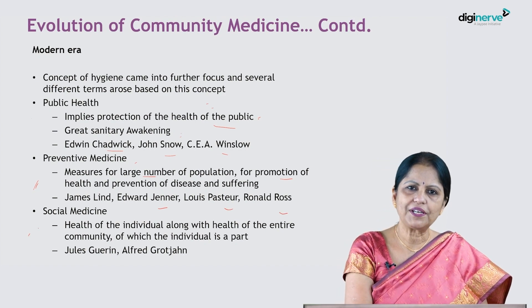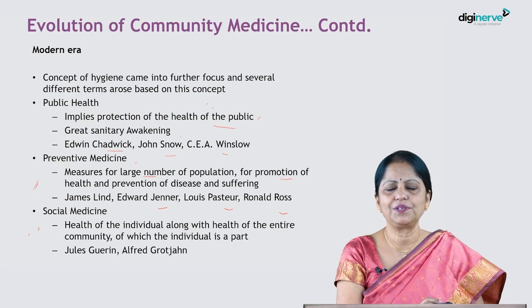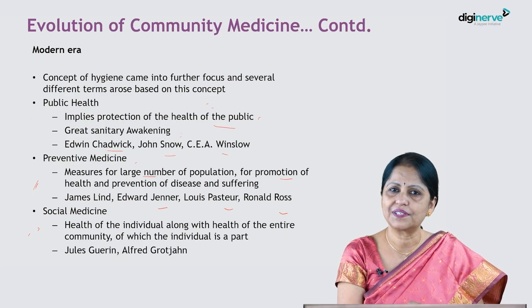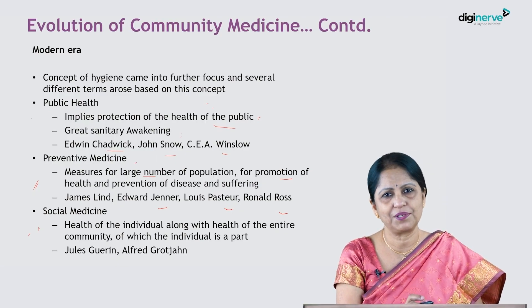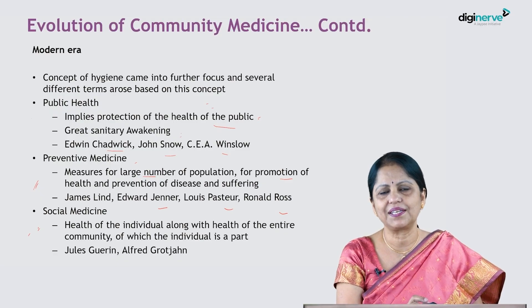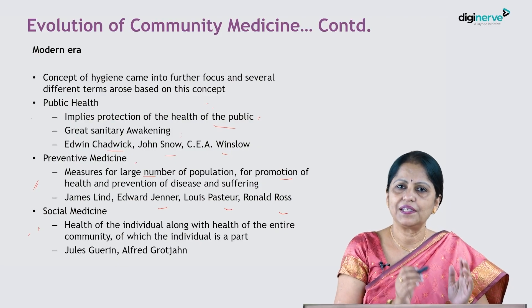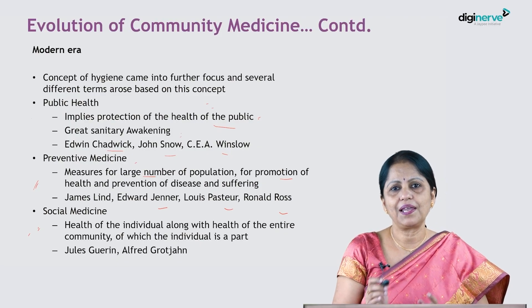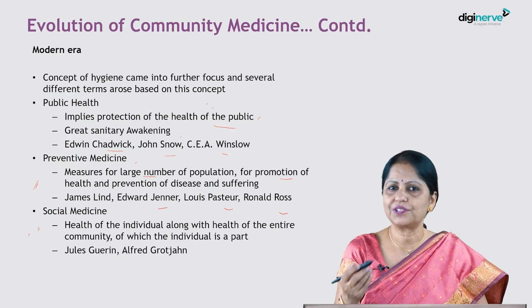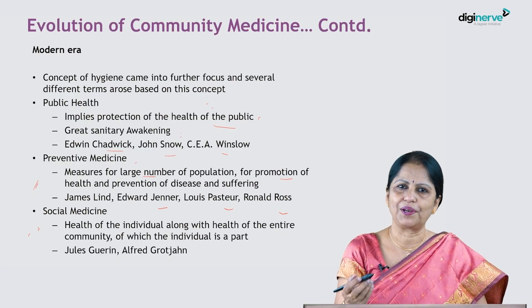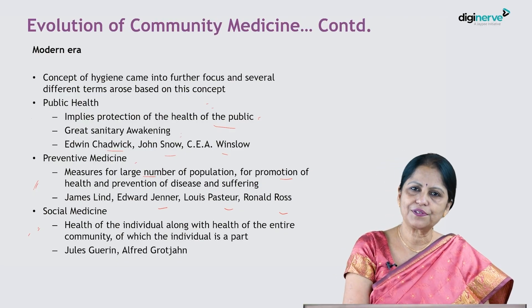Social medicine came into being when it was realized that not only the physical environment but also the social environment plays a very important role in maintaining health, promoting good health, and preventing diseases. This implies individual's health as well as health of the society to which the individual belongs. The stalwarts of social medicine were James Curran, Alfred Grosjean, and others.